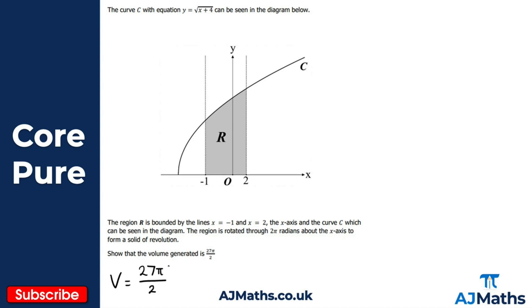Where do we begin? We need the formula for the volume of revolution: V equals the integral of πy². The question is whether it's πy² or πx², and this is where the first mistake is usually made. Because we're rotating about the x-axis, it will be πy². We always choose the opposite variable to what we're rotating about — so if we rotate about the y-axis, it would be πx².